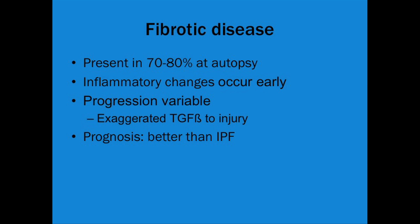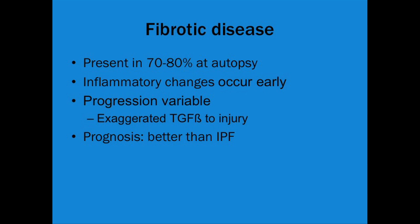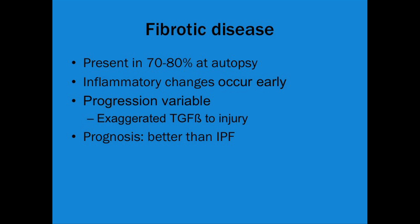Inflammatory changes occur early. Progression is variable — some patients have been told they have lung disease but 5, 10, or 20 years later there's no change, which is wonderful. It seems there's an exaggerated response to injury. TGF-beta is a molecule very tightly linked to fibrosis; it's part of a whole family of signaling molecules that set off other pathways. So if you have an injury, you may be more likely to go on to get fibrosis. The prognosis for scleroderma interstitial disease is better than idiopathic fibrosis, which I believe is opposite compared to pulmonary hypertension.